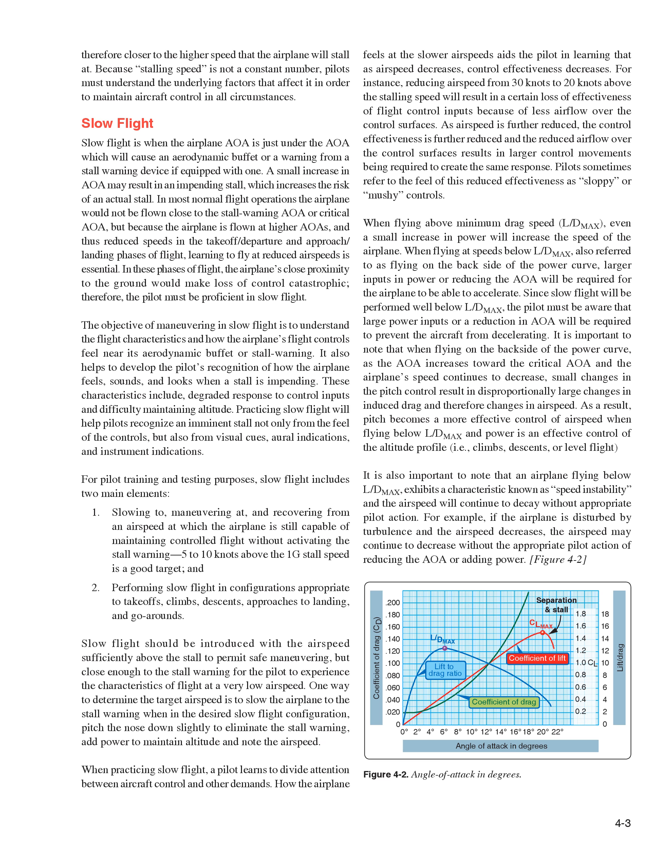For pilot training and testing purposes, slow flight includes two main elements: 1) slowing and maneuvering at, and recovering from, an airspeed at which the airplane is still capable of maintaining controlled flight without activating the stall warning — 5 to 10 knots above the 1G stall speed is a good target — and 2) performing slow flight in configurations appropriate to takeoffs, climbs, descents, approaches to landing, and go-arounds. Slow flight should be introduced with the airspeed sufficiently above the stall to permit safe maneuvering, but close enough to the stall warning for the pilot to experience the characteristics of flight at a very low airspeed.